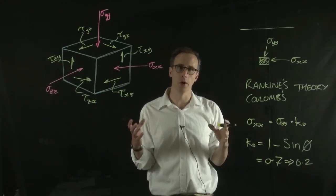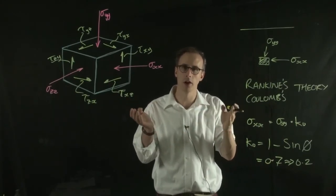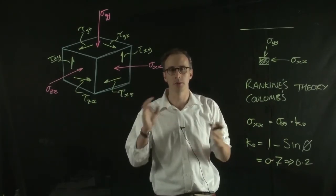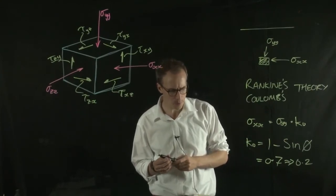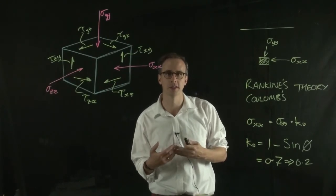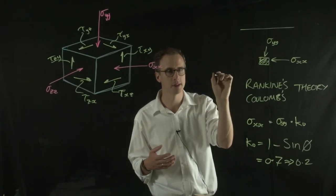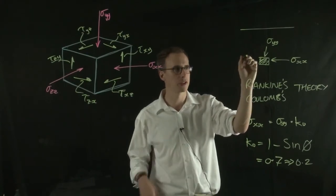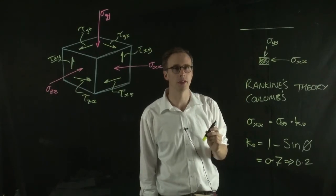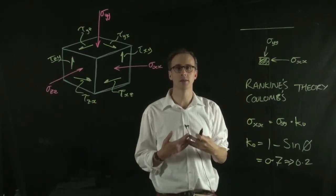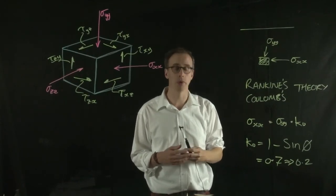Especially in problems that are, or geotechnical structures that are longer than they are deeper or wider, so things like railway embankments. In such cases, we assume a case of plane strain where the stresses going into the long direction, so in the Z direction, are equal to the stresses coming in the other direction. And so in some cases, it's safe to ignore that, and that's what we call plane strain.